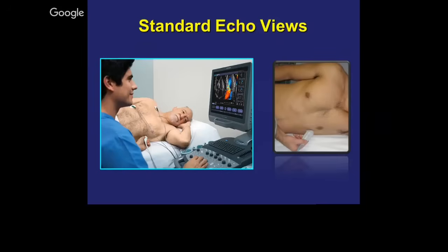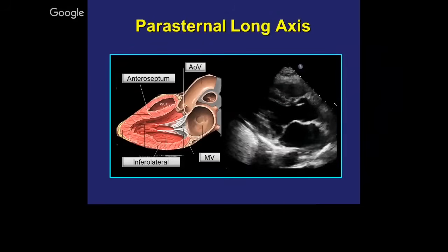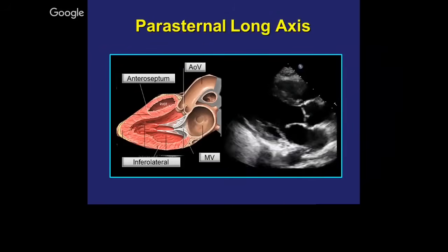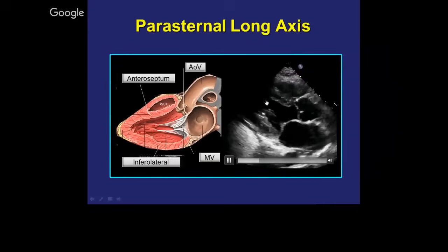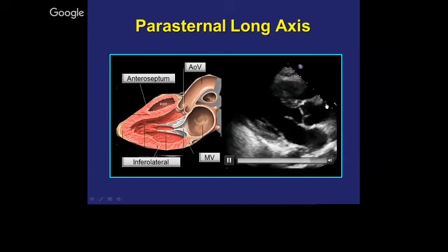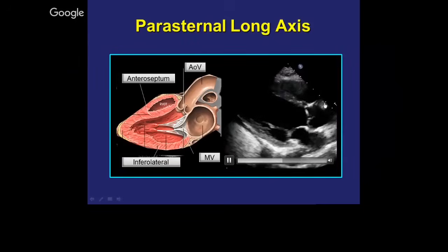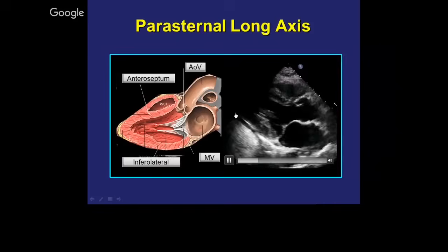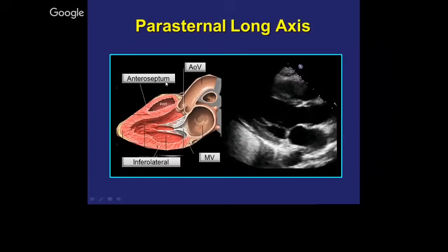This is just to show you the standard ECHO views with the regular transthoracic ECHO. This is the parasternal long axis view, showing the long axis of the left ventricle with the mitral valve here and the aortic valve here, and this is the ascending aorta. We see a little bit of the right ventricle and those are the walls that we're looking at on the left side.